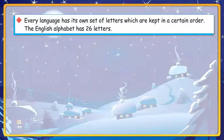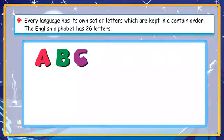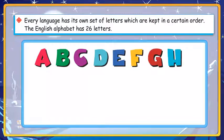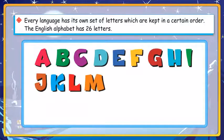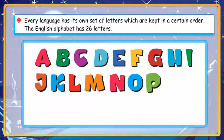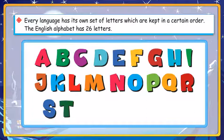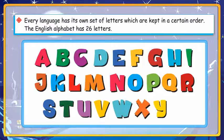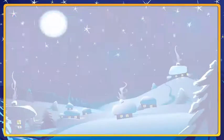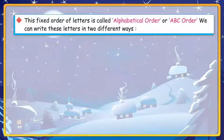The English alphabet has 26 letters: A, B, C, D, E, F, G, H, I, J, K, L, M, N, O, P, Q, R, S, T, U, V, W, X, Y, Z. This fixed order of letters is called alphabetical order, or ABC order.